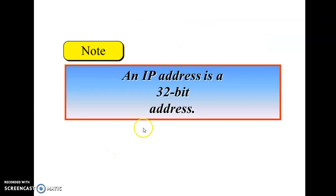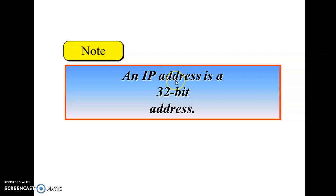An IP Address is of 32-bit address. The length of the IP Address is of 32 bits. It all depends upon which version the IP belongs to. If it belongs to version 4, the length of IP Address is going to be 32 bits. If it is version 6, the length is going to be 128 bits. In today's lecture, we are focusing on IPv4 IP Address which is 32-bit long.